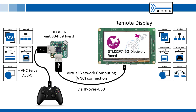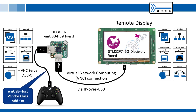The project connects both embedded systems via IP over USB in order to establish the VNC connection. The game controller connected to the second USB host port on the M-Power USB host board is handled via the M-USB host vendor class add-on.